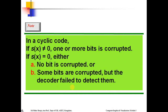The divisor in a cyclic code is normally called the generator polynomial, or simply the generator. In a cyclic code, if S(x) is not equal to 0, then one or more bits are corrupted. If S(x) is equal to 0, then either no bit is corrupted, or some bits might be corrupted but the decoder has failed to detect it — so you cannot be 100% sure the message was not corrupted.